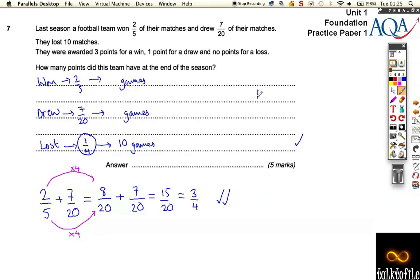And then you can work out the total games. If they lost a quarter of their games, and it must be a quarter because they won and drew 3 quarters, so they lost a quarter of 10 games. The total games must be 40.